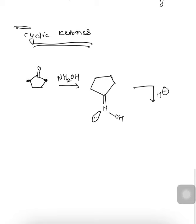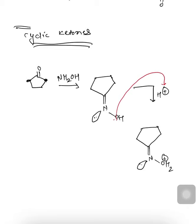This ketoxime reacts with H+, so the lone pair of the oxygen atom attacks H+, forming an O-H2+ hydronium-type ion on the C=N system, with a lone pair on nitrogen. Since both R groups adjacent to the ring are the same, there is equal probability of either migrating to eliminate OH2+. Suppose one bond is broken: a carbon atom migrates toward nitrogen and H2O is eliminated.